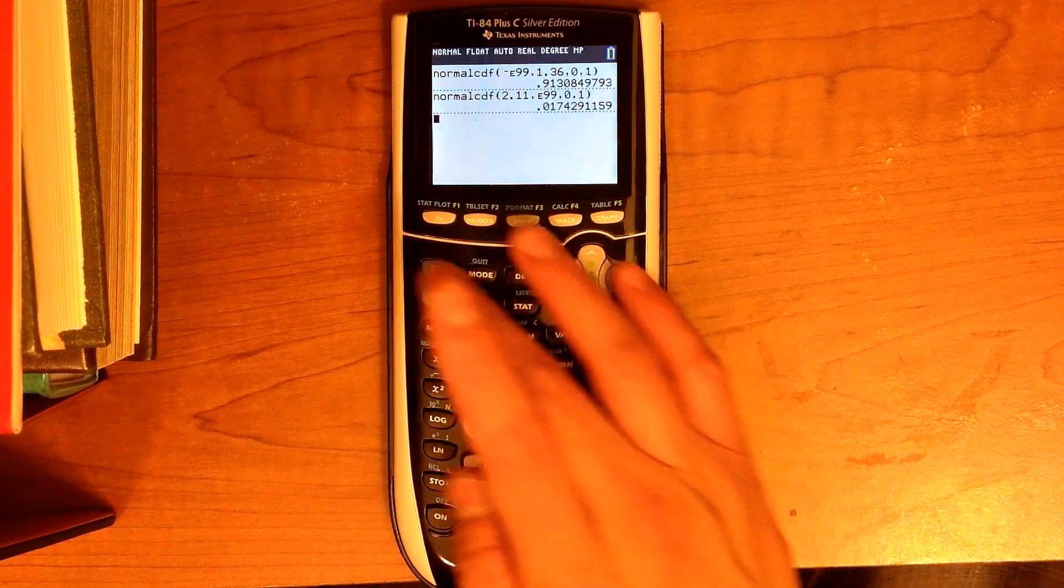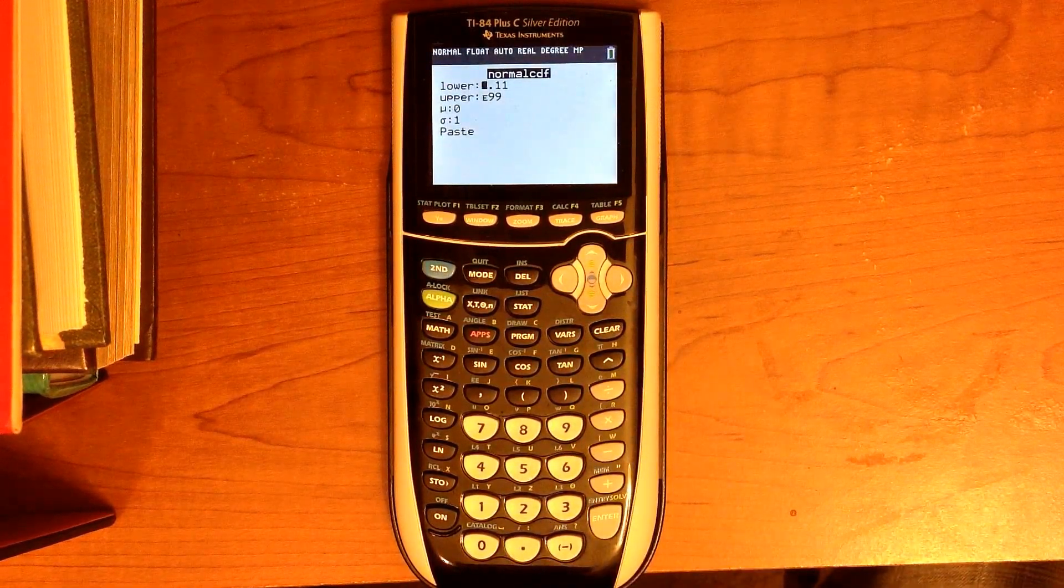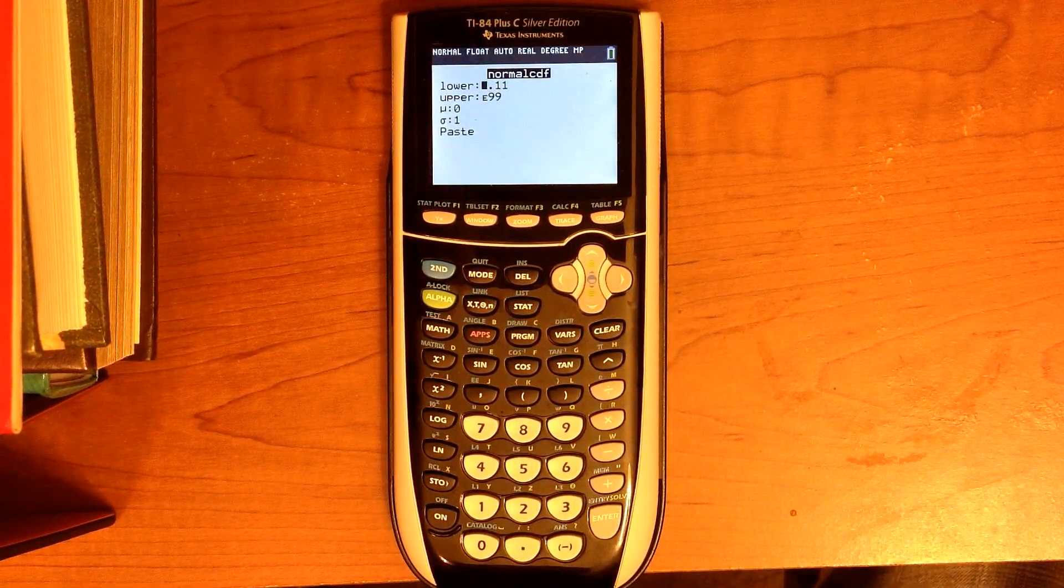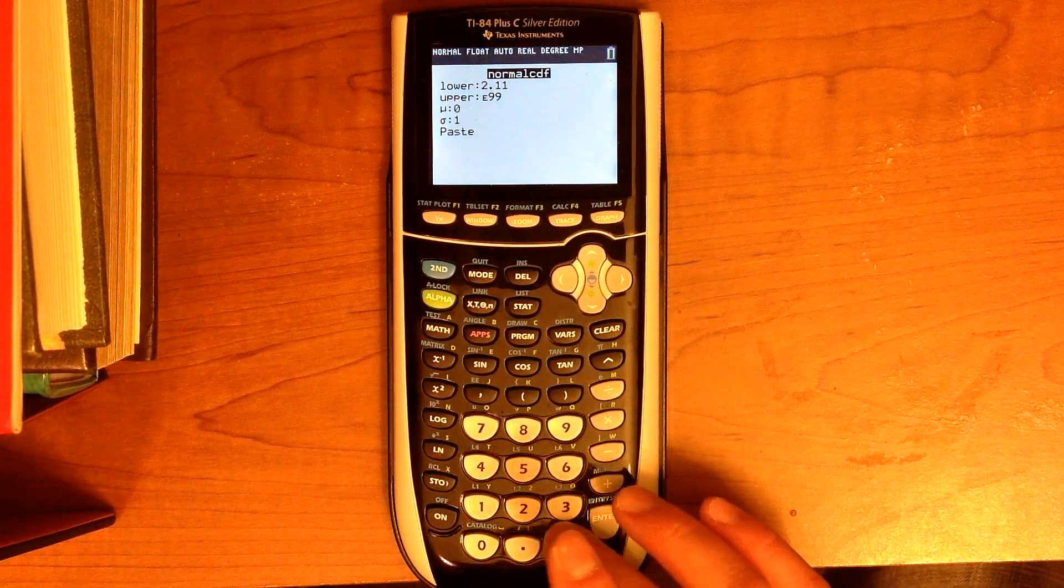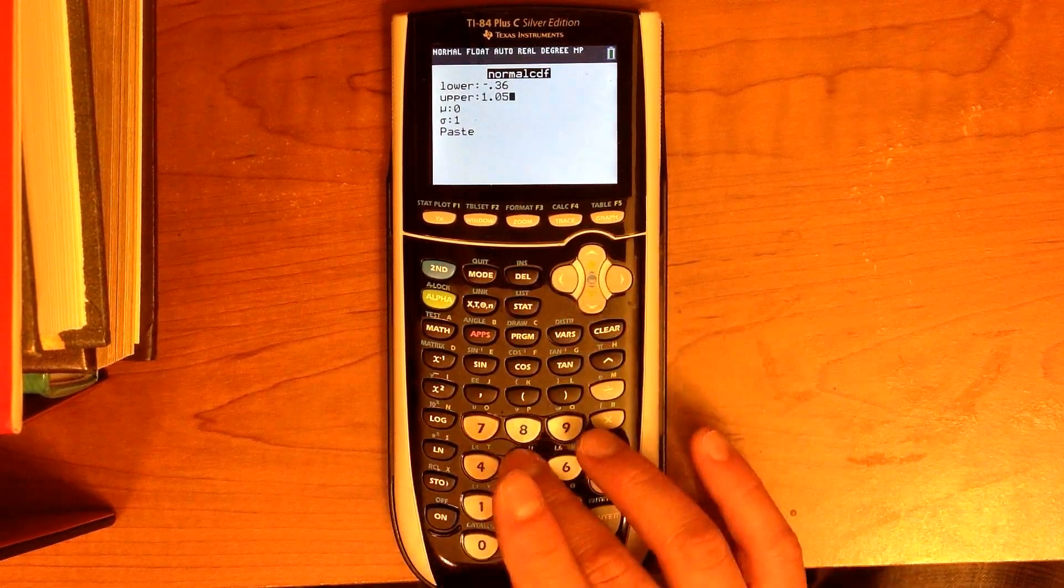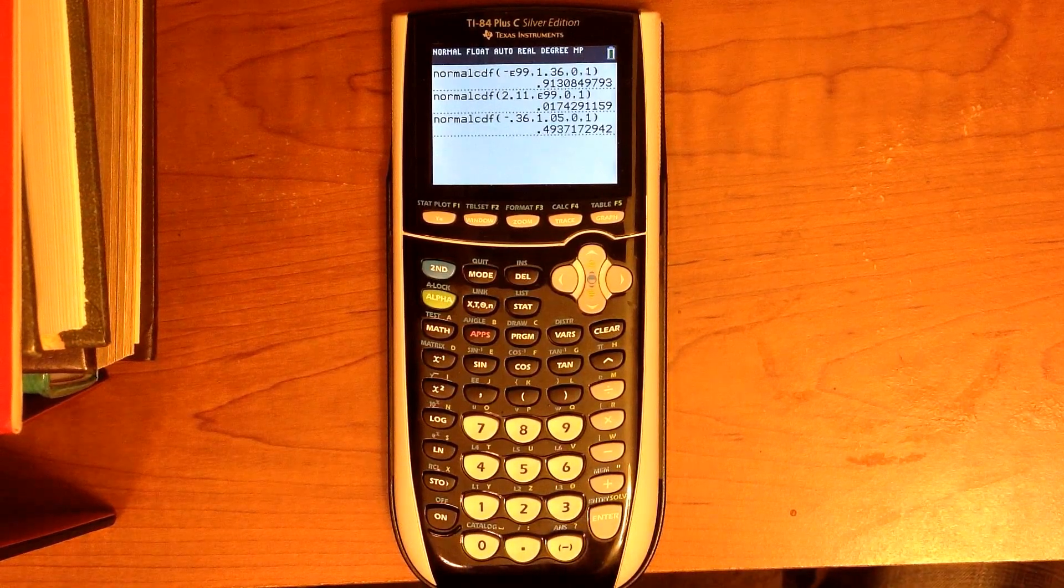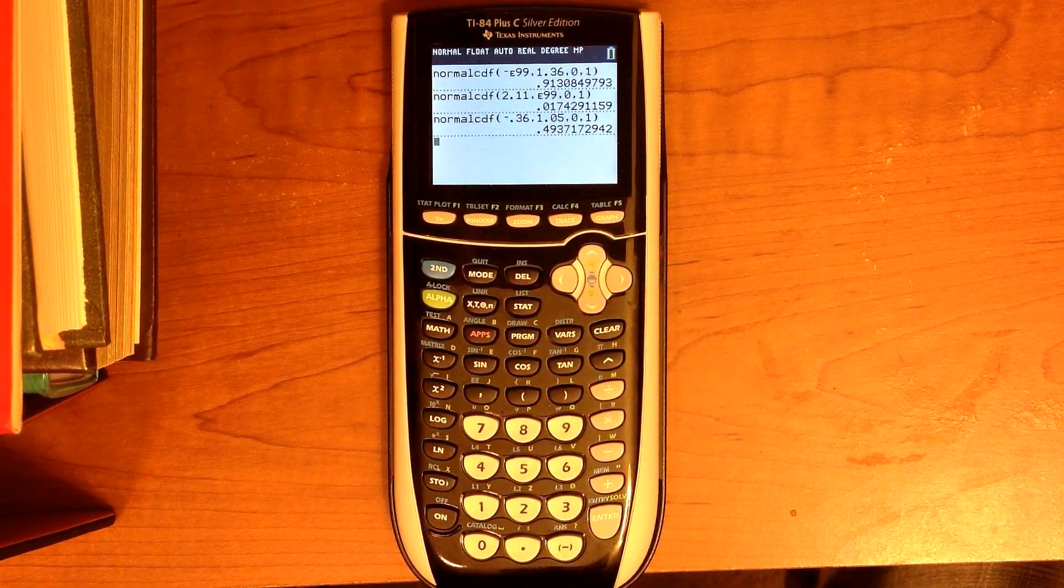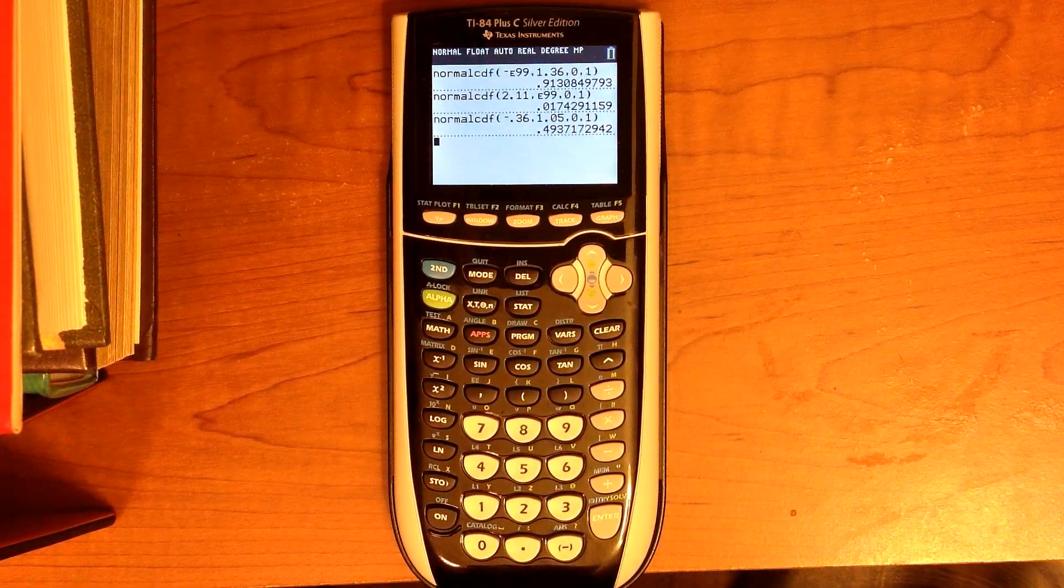All right. Let's do number 15. The proportion of values between a Z-score of negative 0.36 and 1.05. So let's put negative 0.36 for lower and 1.05 for upper. Keep the other terms the same, hit enter, and you will see that 49.37% of values have a Z-score between negative 0.36 and 1.05.